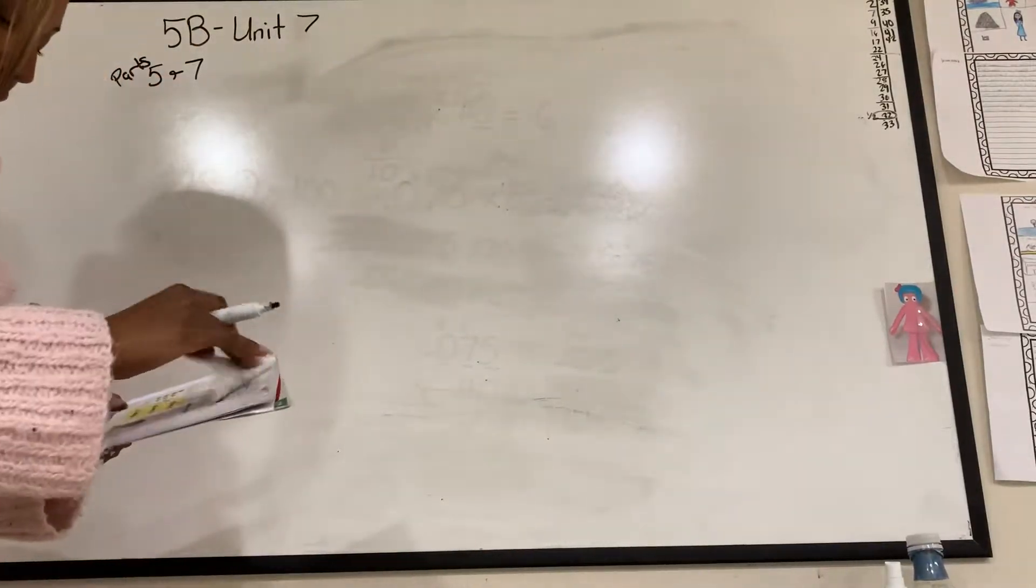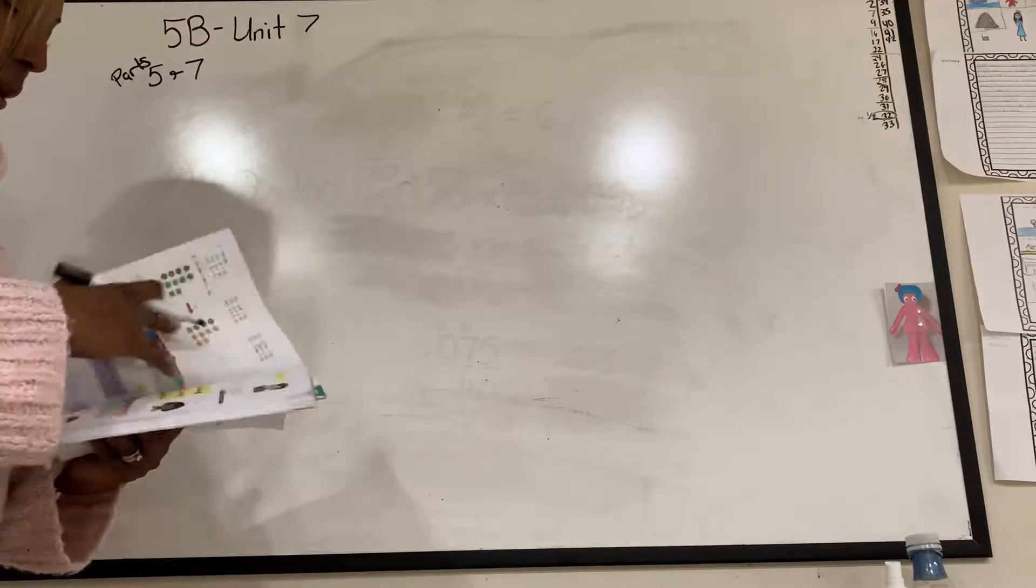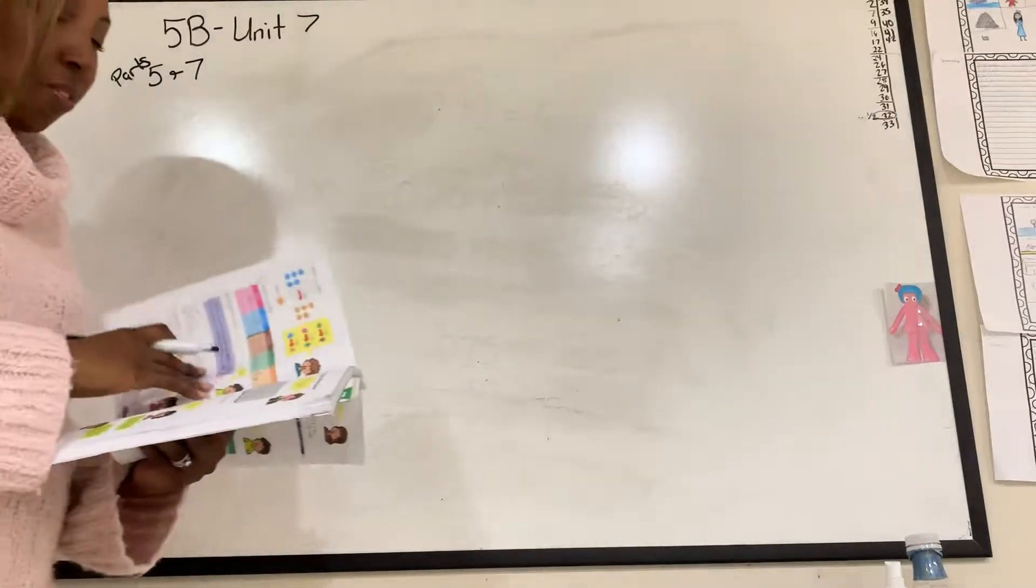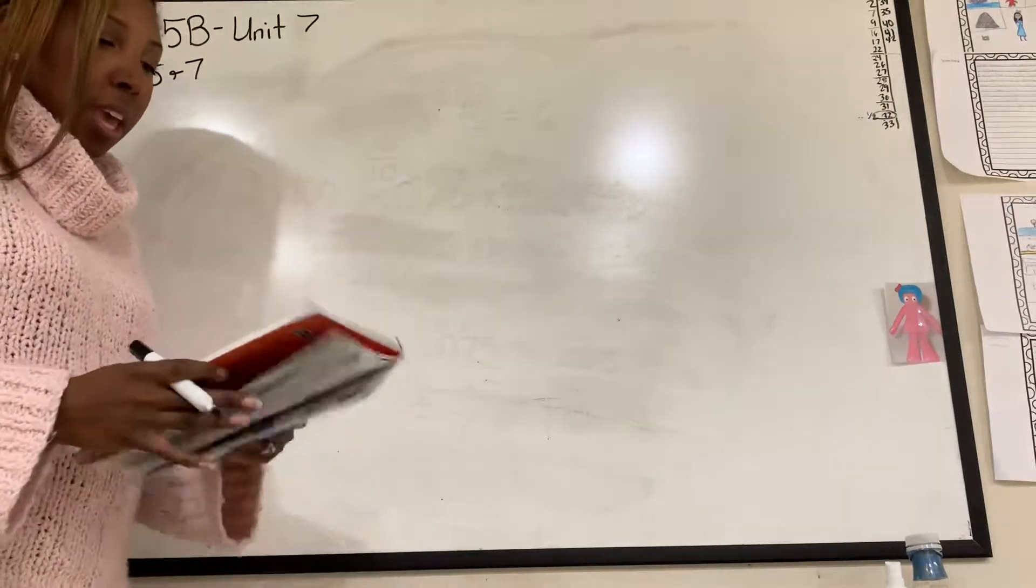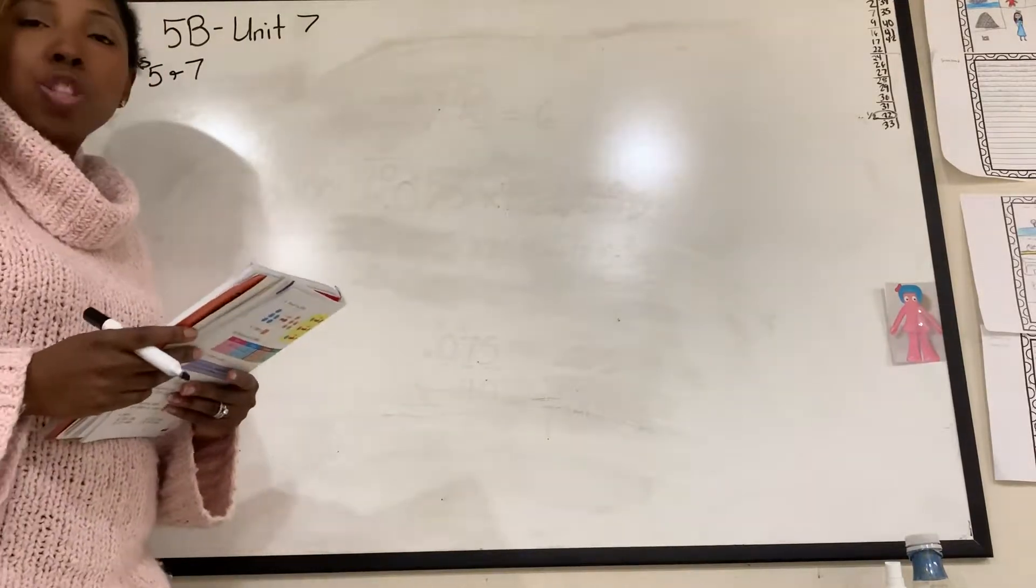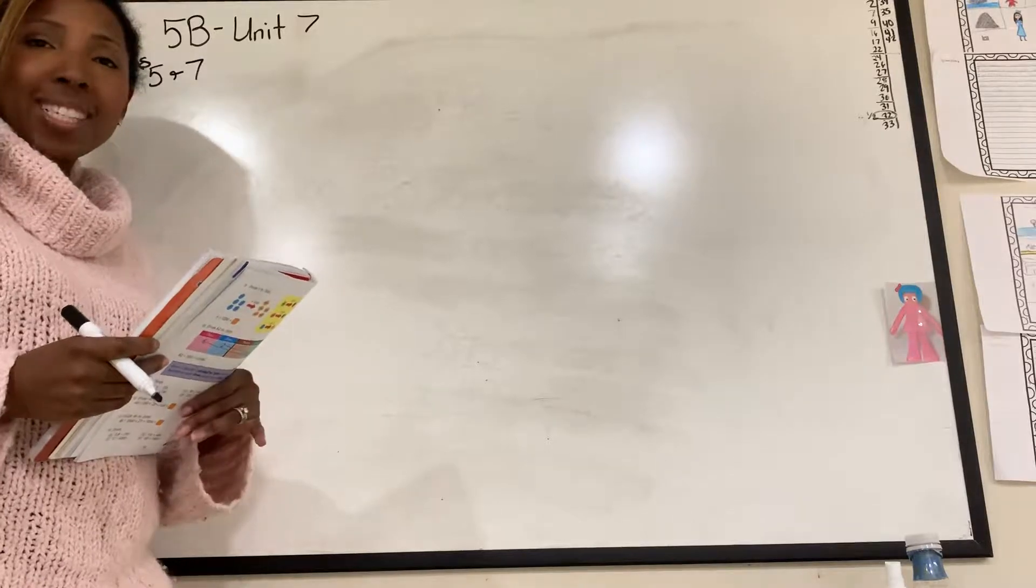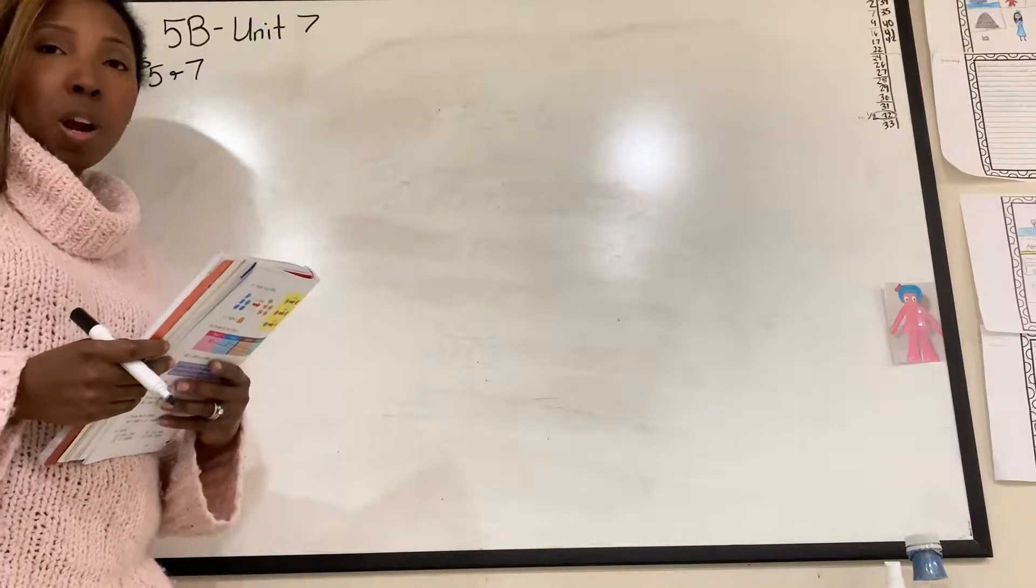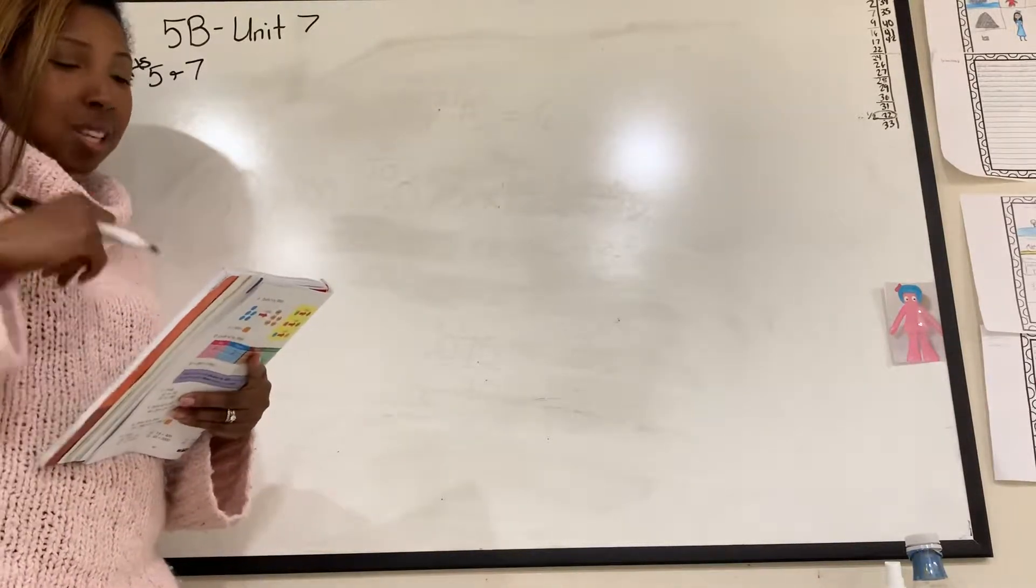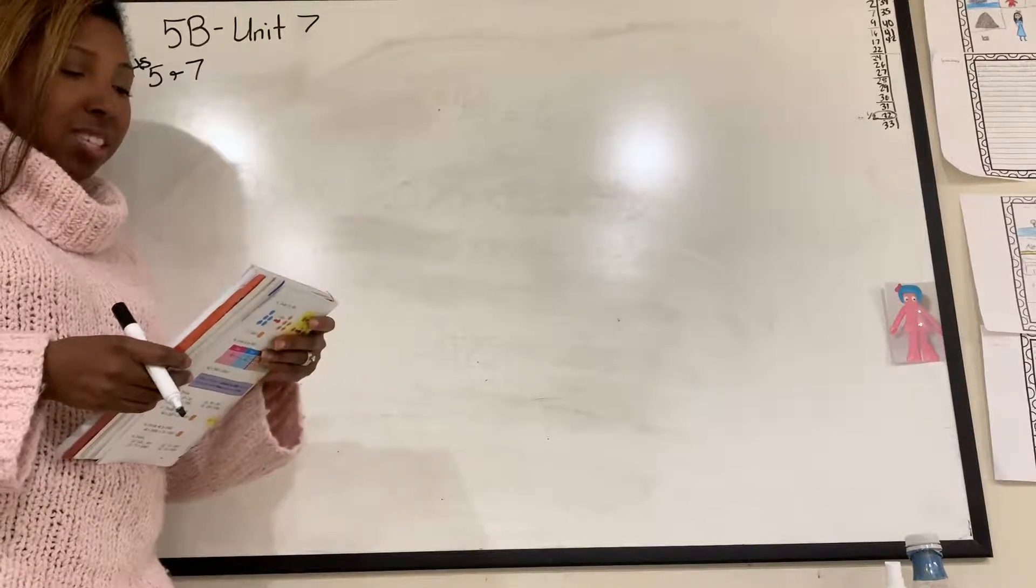All right. So now we're going to move on. And the next part for section 7, feel free to stop now, is going to be multiplication by a two-digit whole number. So if you feel that's too much right now, then go ahead and stop the tape. And I'll see you tomorrow. Otherwise, let's go on to section number 7.